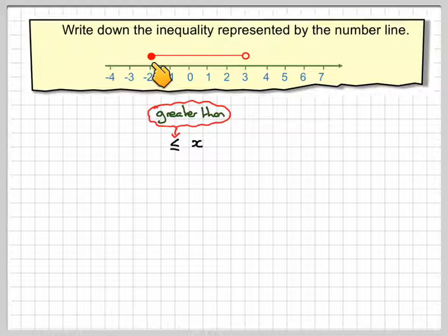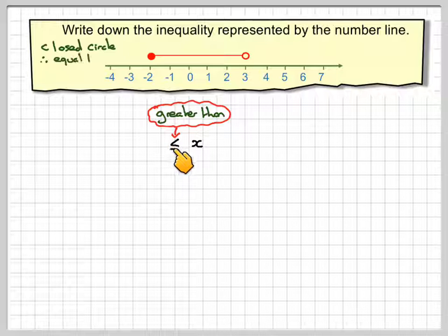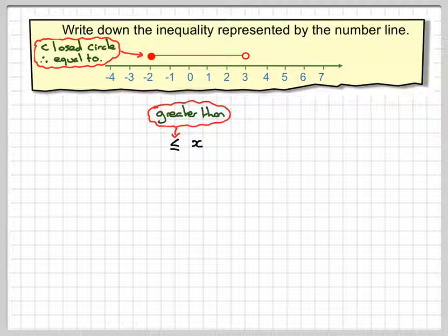OK, the dot is filled in, so it's closed, so it will be equal to as well. The number we need to put here is minus 2.